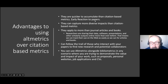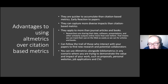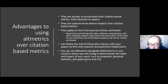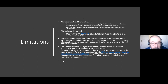Altmetrics can go deeper to look at qualitative data underneath — who's saying what about research, where in the world research has been cited, reused, or read. Advantages: they're quicker to accumulate, so for an early career researcher it could take time before getting citations, but you can pick up an early reaction. They capture a more diverse impact than citation-based metrics and apply to more than journal articles — including data, software, presentations, and other scholarly outputs.